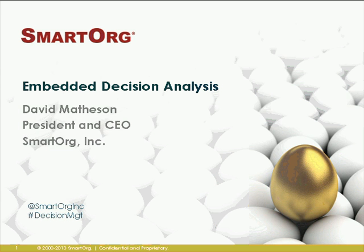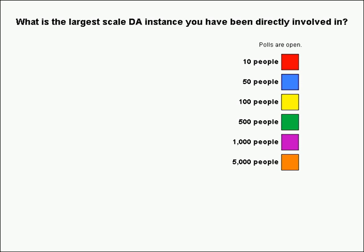Let me start with a question of scale, because I have a hypothesis here. I'm pretty sure it's true. What's the largest scale instance that you have been directly involved in for decision analysis — the number of people directly involved in the decision process somehow: providing information, creating alternatives, et cetera. I want to explicitly exclude those affected by the decision. Clearly a major decision can have impact on thousands and thousands of people, but I mean the people really working it as a decision problem.